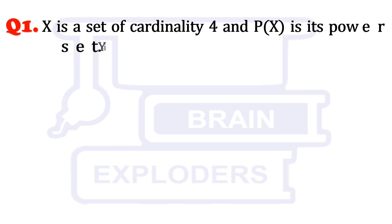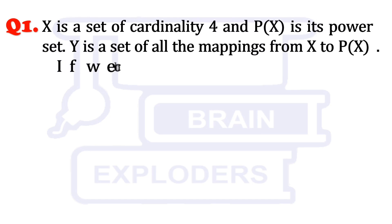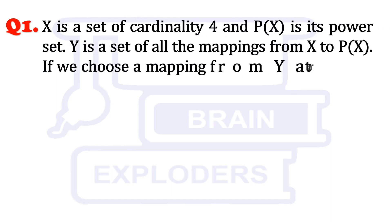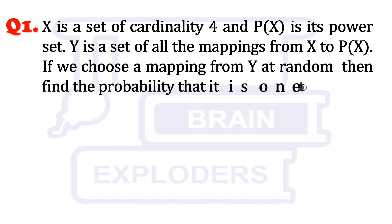X is a set of cardinality 4 and PX is its power set. Y is a set of all mappings from X to PX. If we choose a mapping from Y at random, find the probability that it is one-to-one.